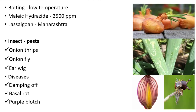Bolting in onion occurs due to low temperature, causing elongation of the stem. Spraying of maleic hydrazide at 2500 ppm is necessary to check sprouting in onion. This will be beneficial when done 25 to 30 days after storage. Hence, maleic hydrazide is used to check sprouting.